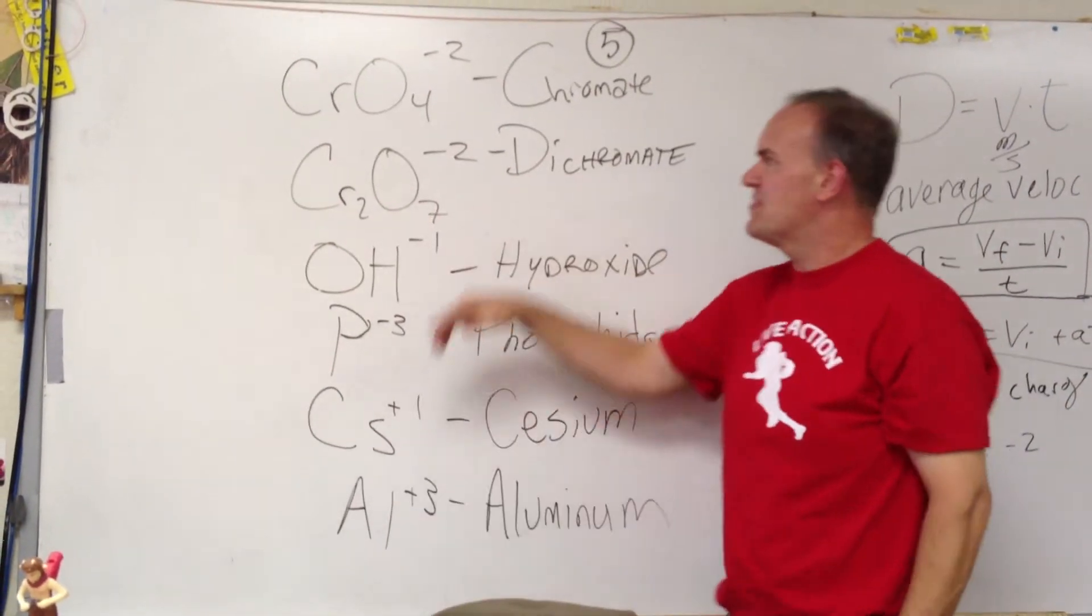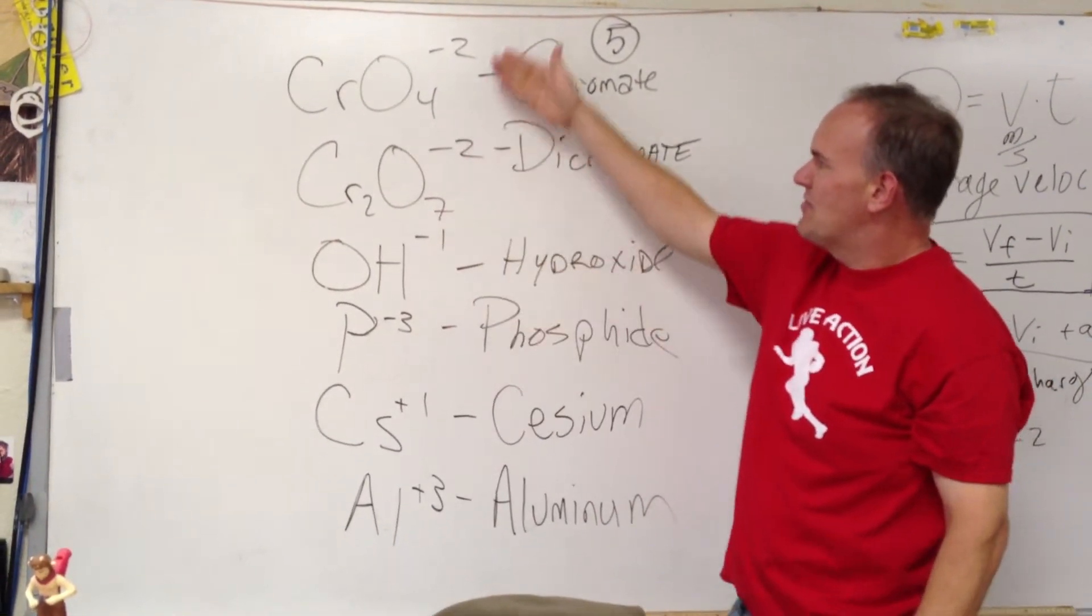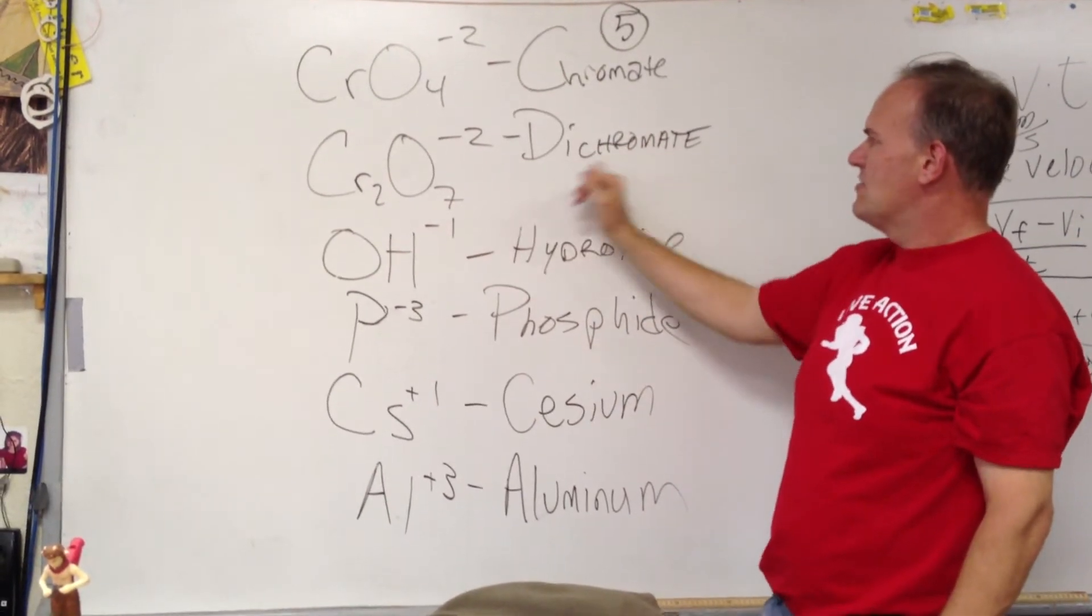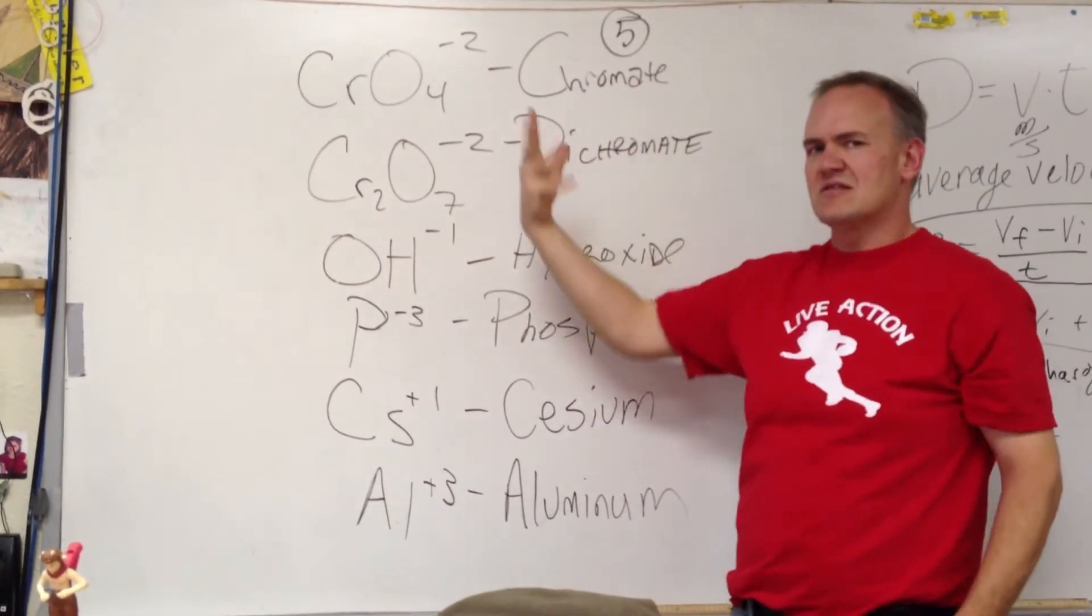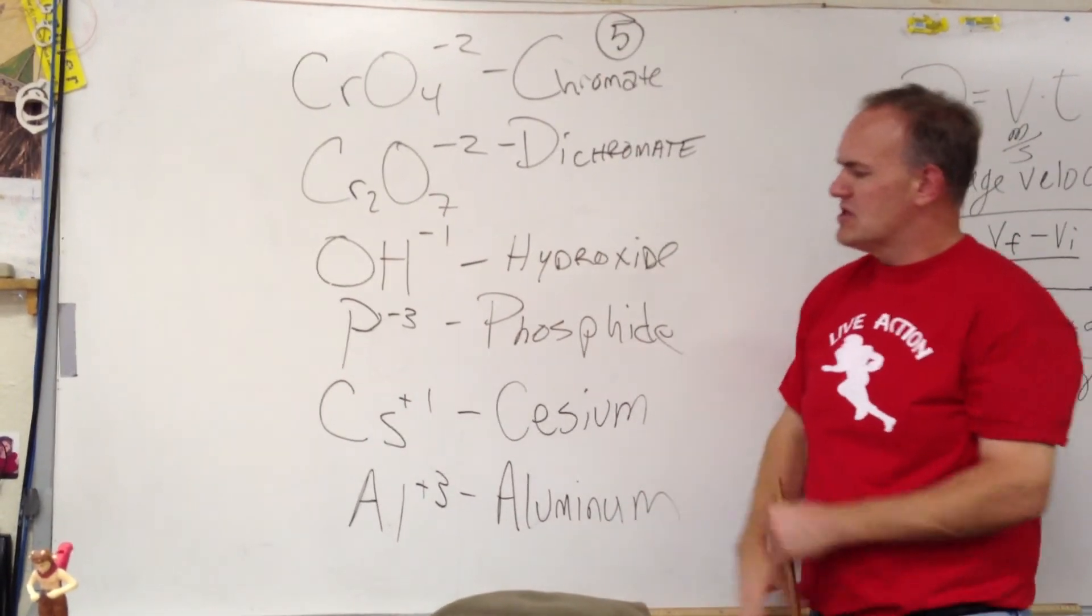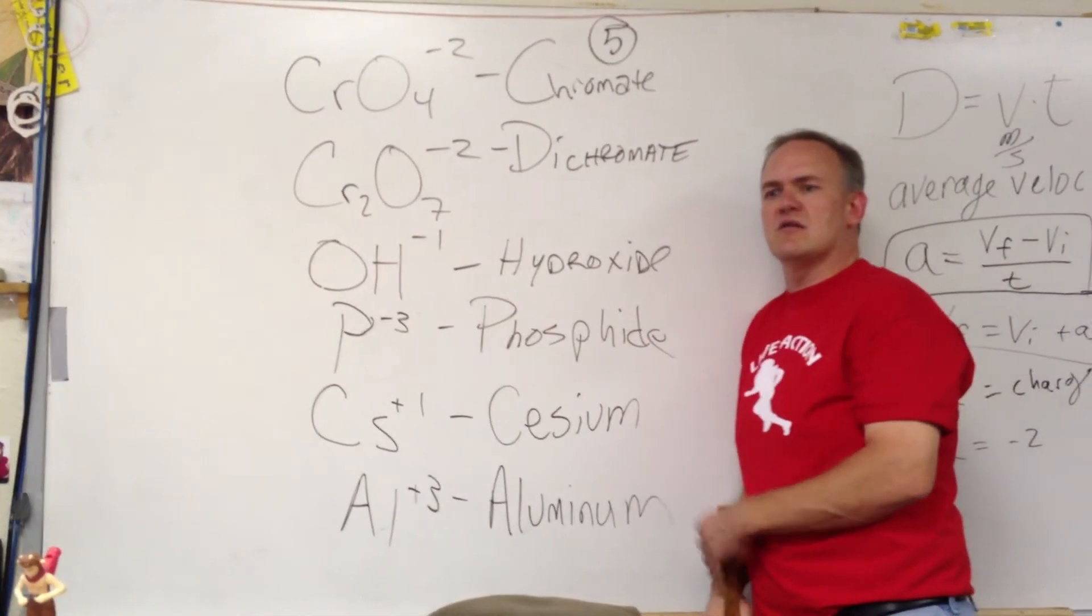So there's not really a tip there. You just have to memorize that. But they're both negative two. That's one of those patterns we see - when the stem is the same, the charge tends to be the same. So those are the new ones coming up on this ion quiz. Good luck.